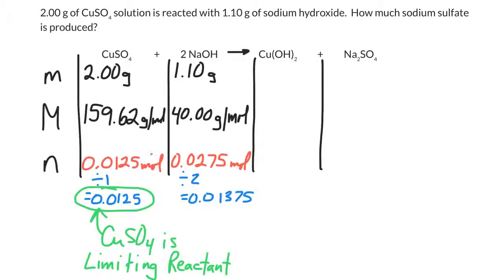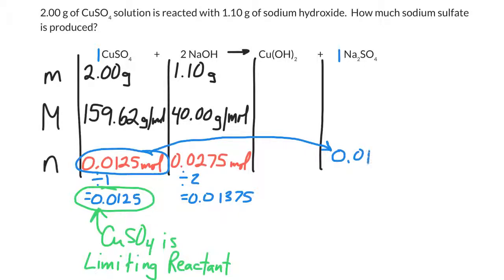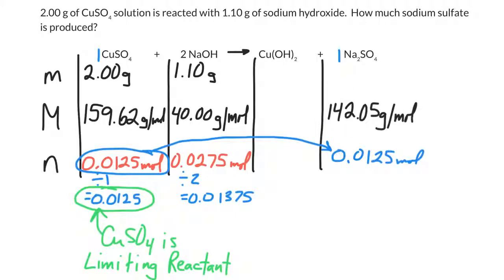So I want to know how many moles of sodium sulfate are being produced. It's a one-to-one ratio, so the moles of sodium sulfate are the same as CuSO₄: 0.0125 moles. The molar mass of sodium sulfate is 142.05 grams per mole, and now I can calculate the mass by multiplying moles times molar mass. I get 1.78 grams of sodium sulfate being produced.